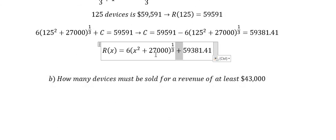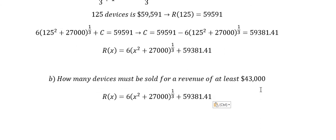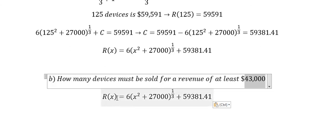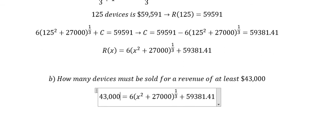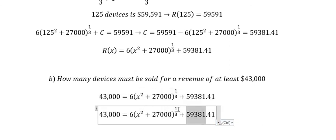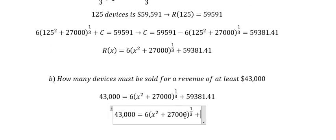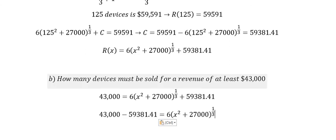Question number two: find how many devices must be sold for a revenue of at least 43,000. We substitute this number into the revenue function and now we need to find the value of x.